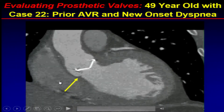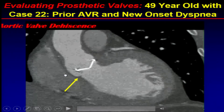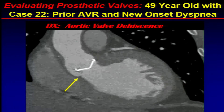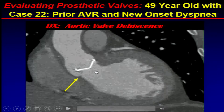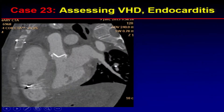You can see there's lack of tissue in the annulus and there was marked paravalvular regurgitation.